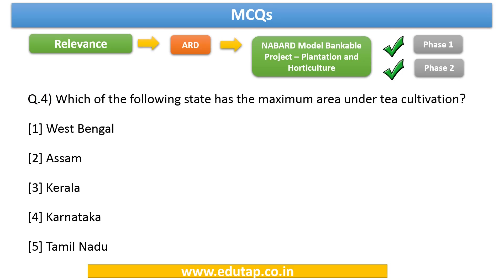Question number four: Which of the following states has the maximum area under tea cultivation in India? The answer is Assam. Kindly memorize this. This question is important with regard to Phase 1.